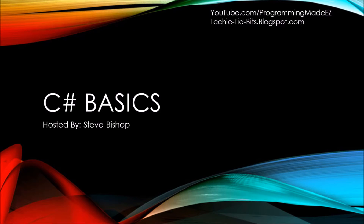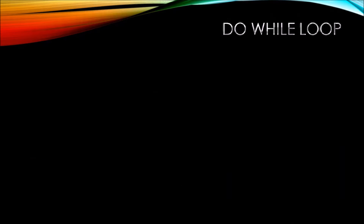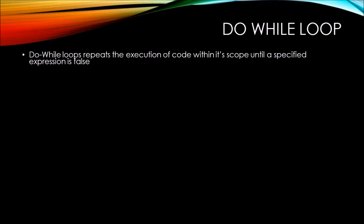In this video on C# basics, we'll be taking a look at the do-while loop. The do-while loop repeats the execution of code within its scope until a specified expression is false.